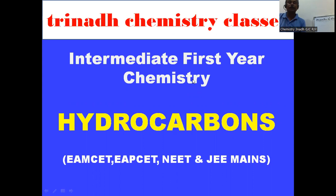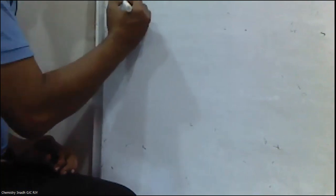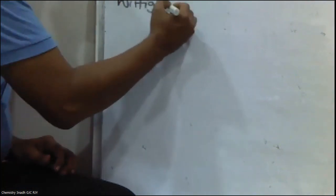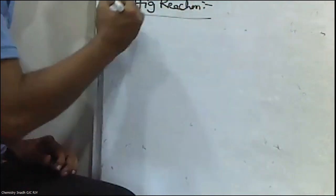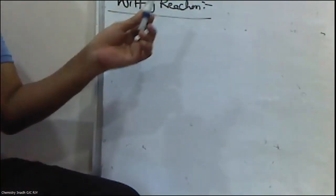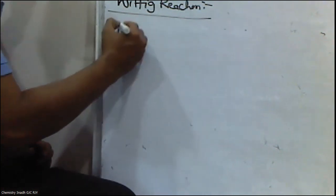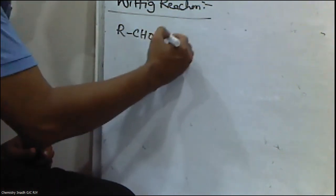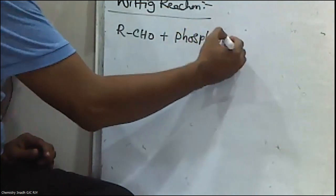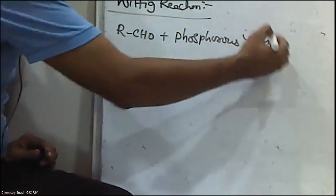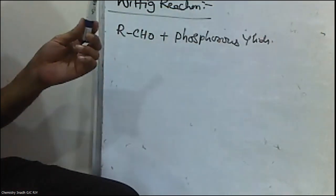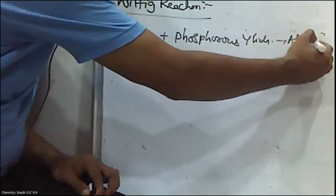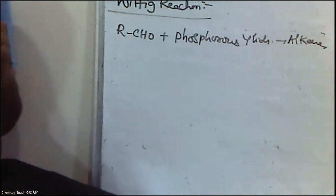This is one of the important reactions for the preparation of alkenes. What is the Wittig reaction? Alkenes are hydrocarbons having a carbon-carbon double bond. When aldehydes are treated with phosphorous ylides, alkenes are formed. This reaction we are calling the Wittig reaction.